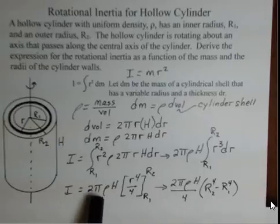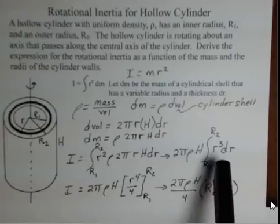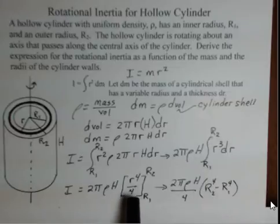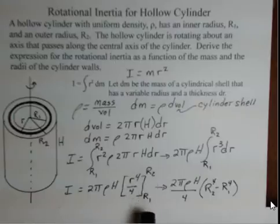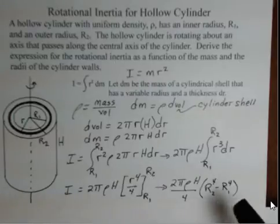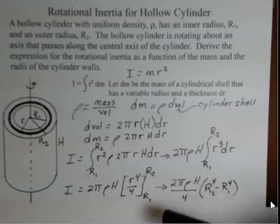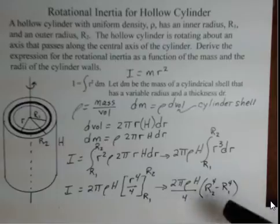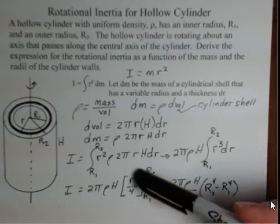Again, the constants 2 pi rho h, the r cubed, when I do the antiderivative, becomes r to the fourth divided by four. That has to be evaluated at r2 and r1, the upper limit and the lower limit. So we do that here, and we get r2 to the fourth power, I've pulled out the four, minus r1 to the fourth power.